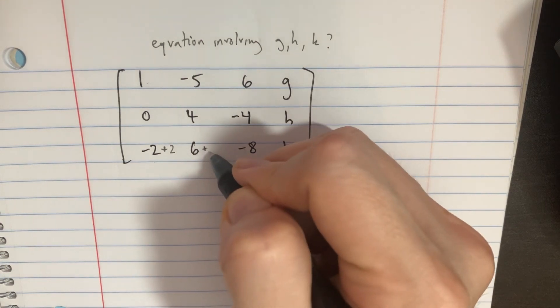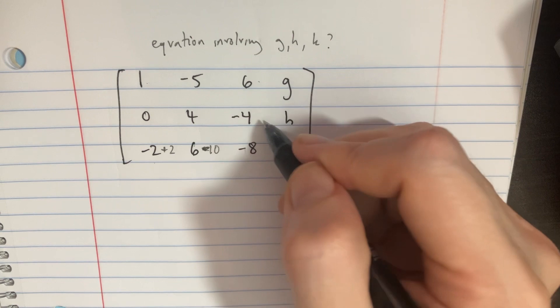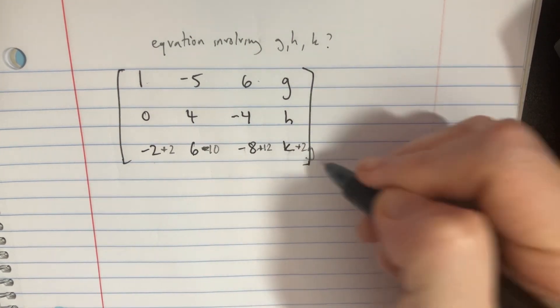And so we'd also have to subtract 10 here, and then multiply that by 2 to get 12, so add 12 here. And then we have to add 2g over here.